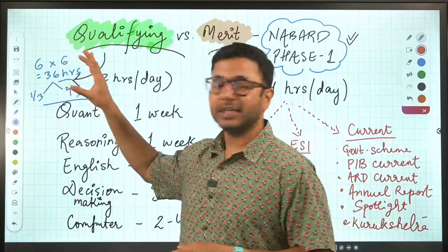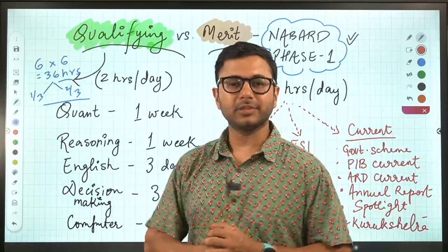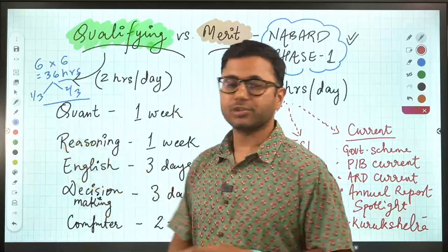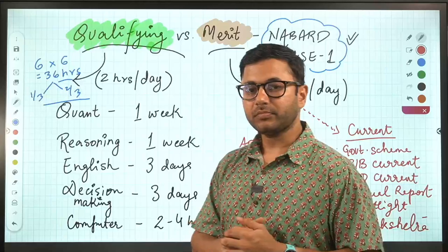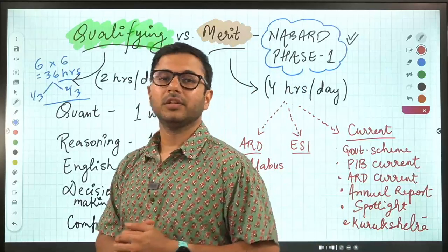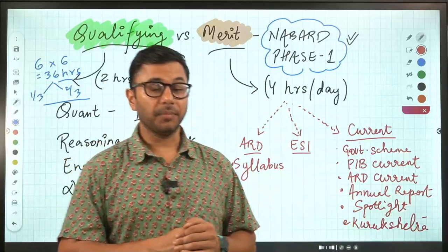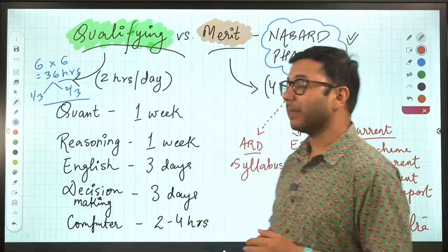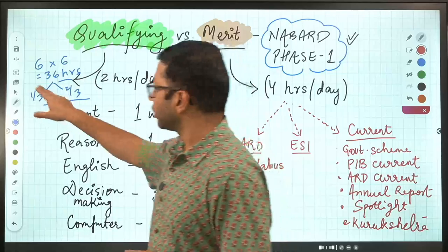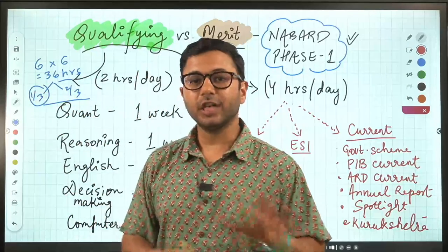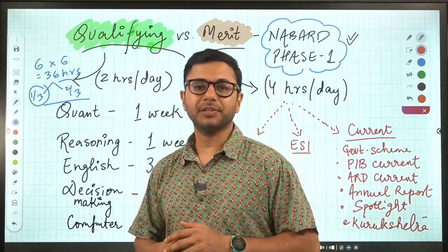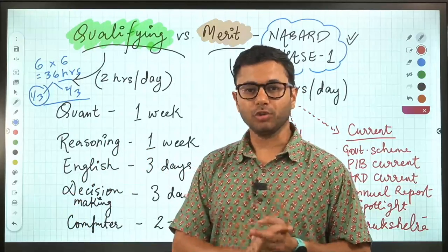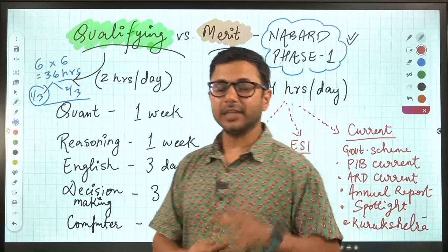The reason I am not ignoring these qualifying subjects is very simple. The level of questions in Quant, Reasoning, and English in RBI 2022 was very high. And therefore, it is expected that in NABARD also the level of Quant, Reasoning, and English might go up. For the namesake, they are called qualifying, but in reality, they might become very difficult for a lot of students to qualify. Something that has been happening in UPSC also, specifically in CSAT in prelims.